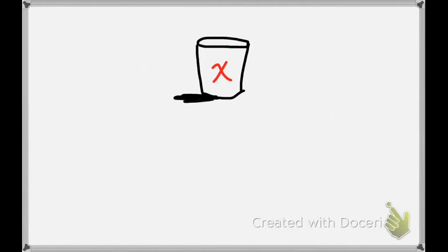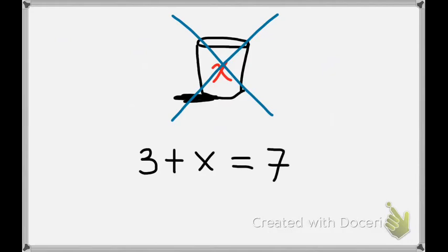Now, we don't actually draw a bucket every time we want to do an algebra problem. So in this problem, we would actually just write it as 3 plus X equals 7. So instead of a bucket with a label X, we just write the label.